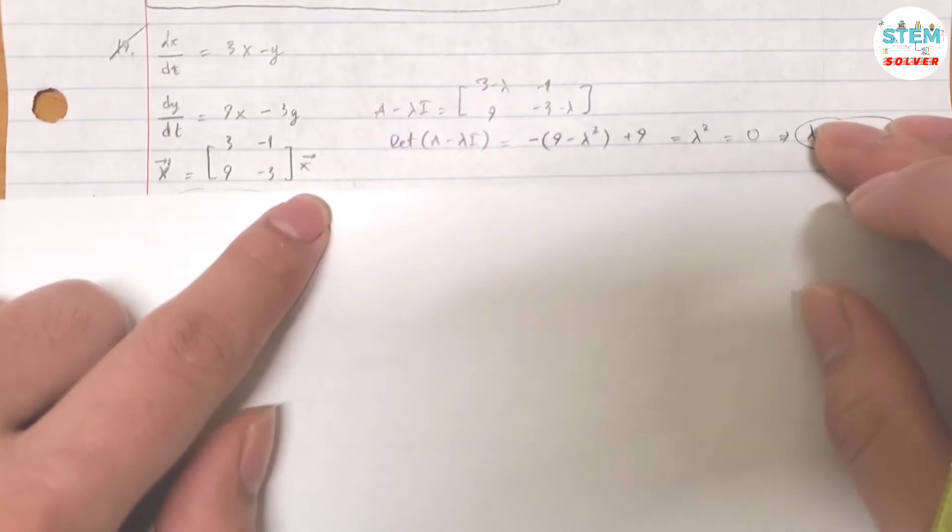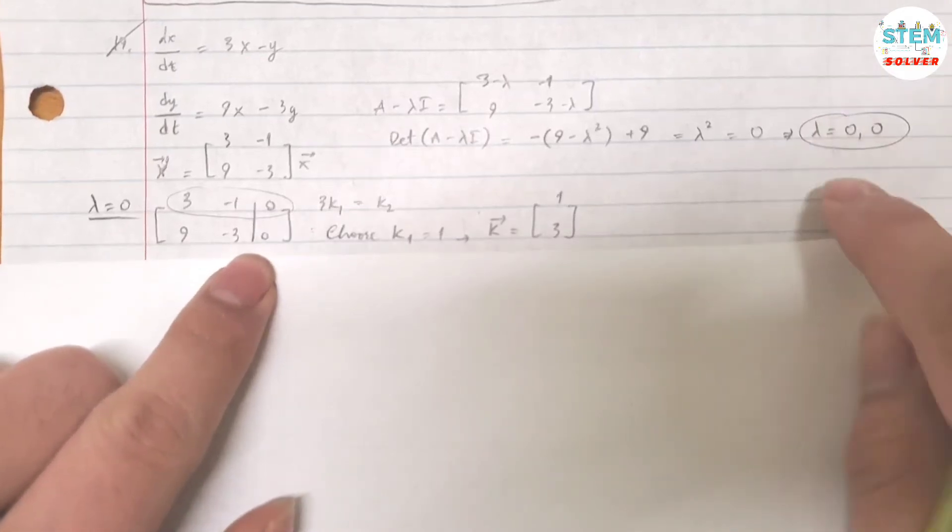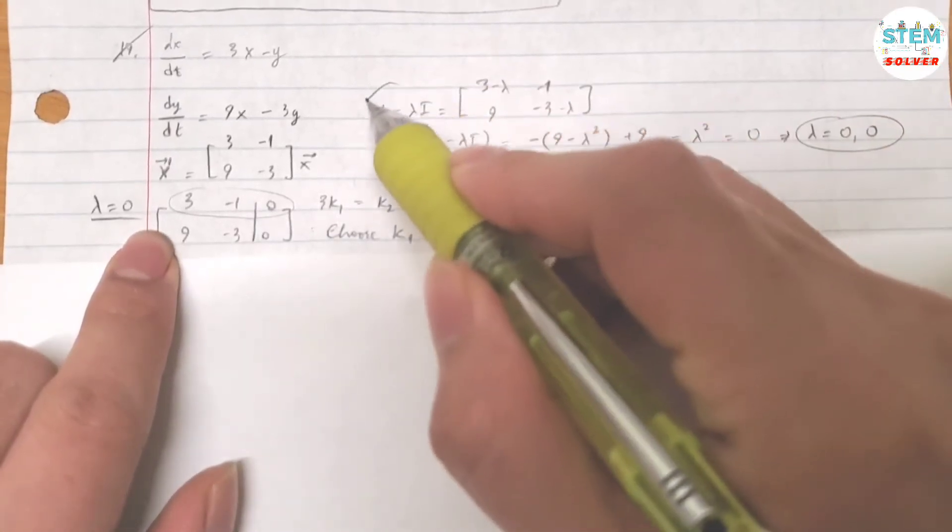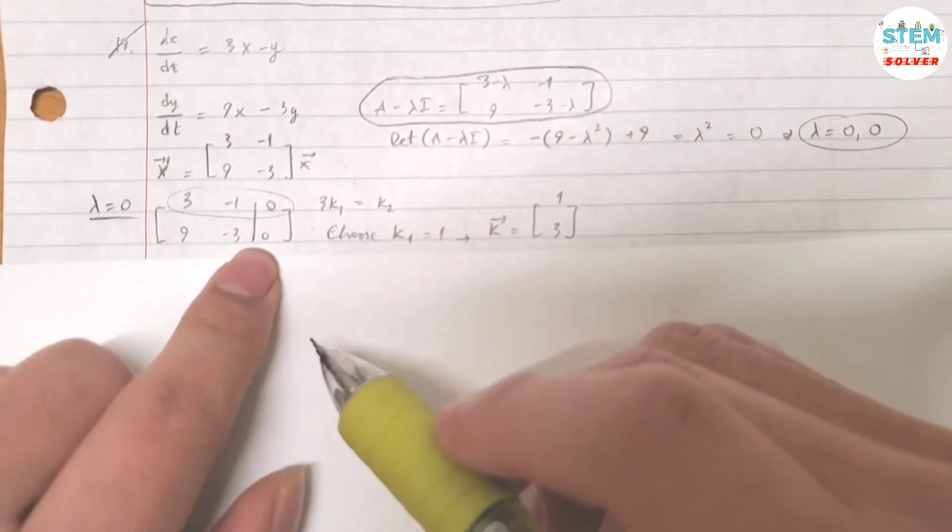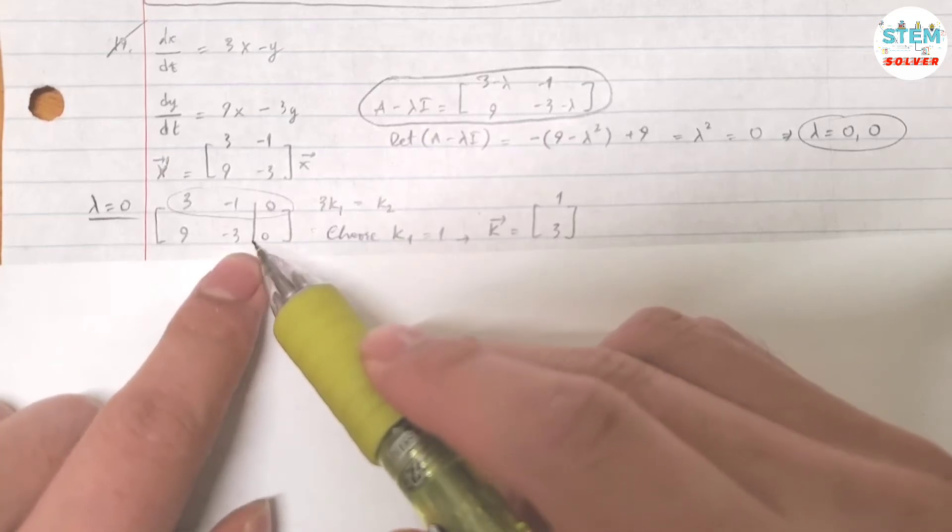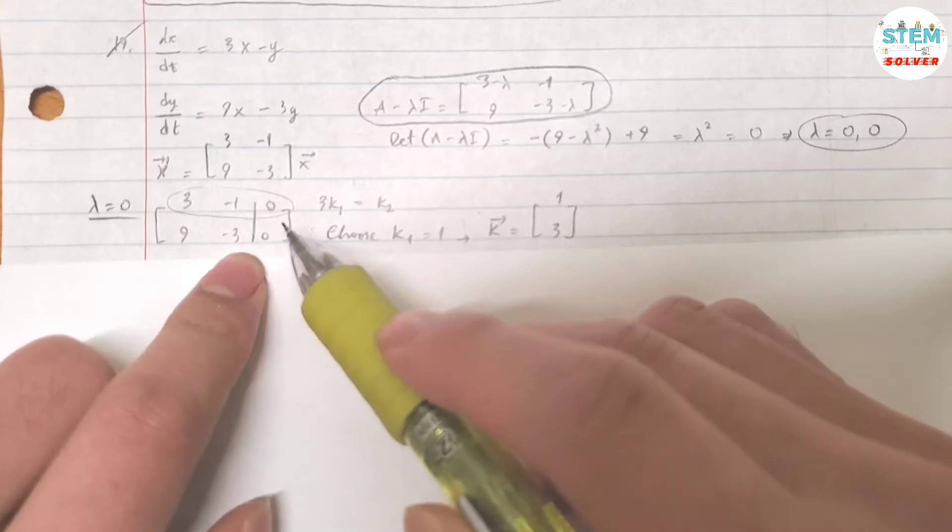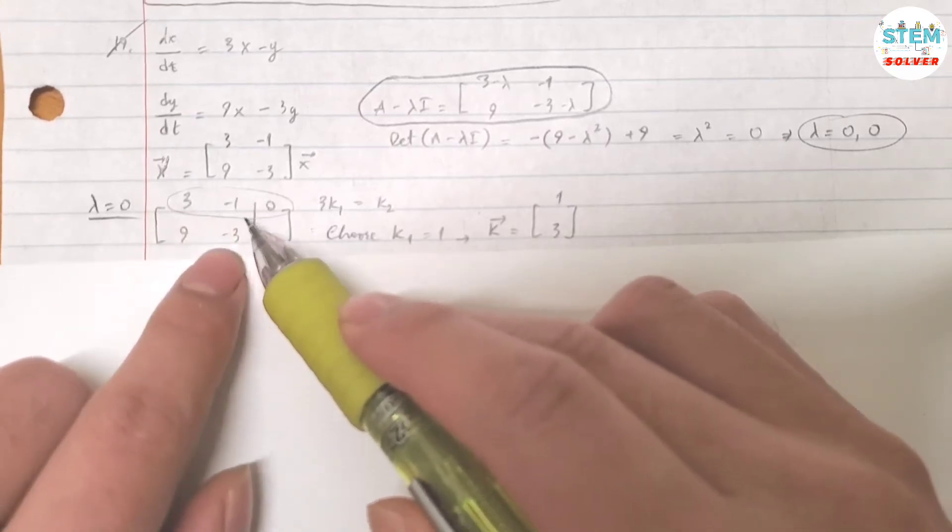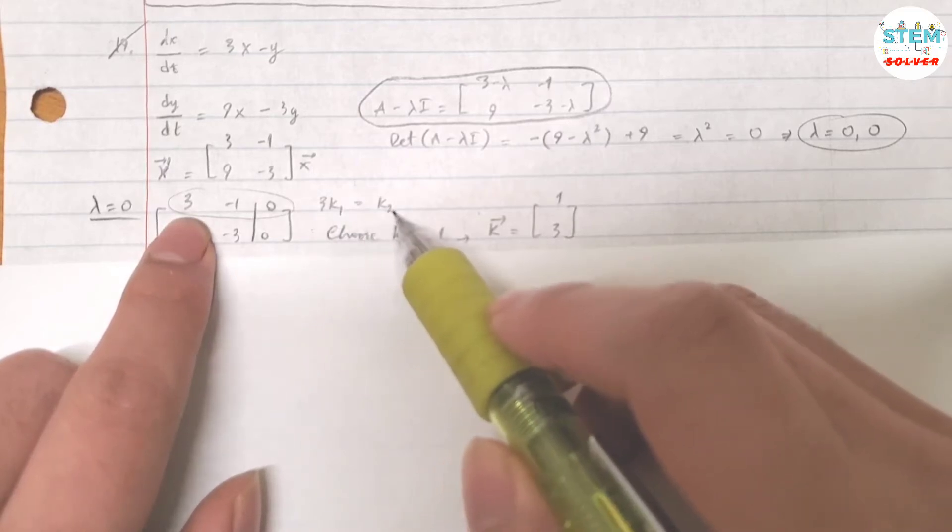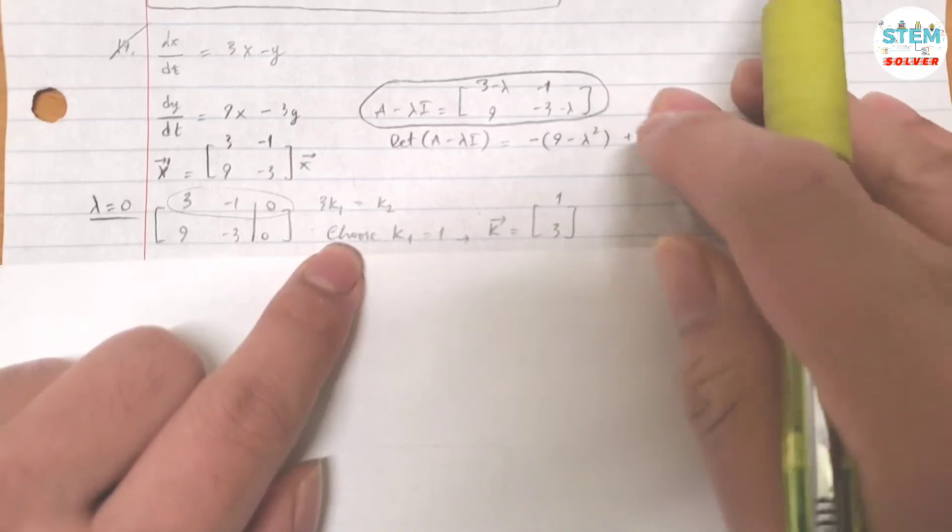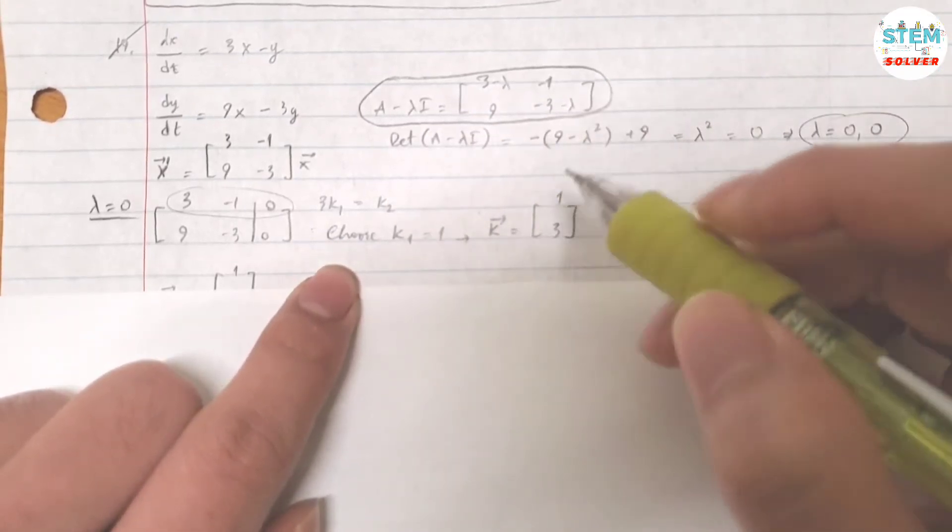For lambda equals 0, plug it back into this matrix. You get this matrix augmented with 0. This will give an infinite solution, so instead of reducing it to row echelon form, I'll solve using one of these equations. Using the first equation: 3K1 equals K2. If I choose K1 equals 1, then K2 is 3, and my vector K is [1, 3].